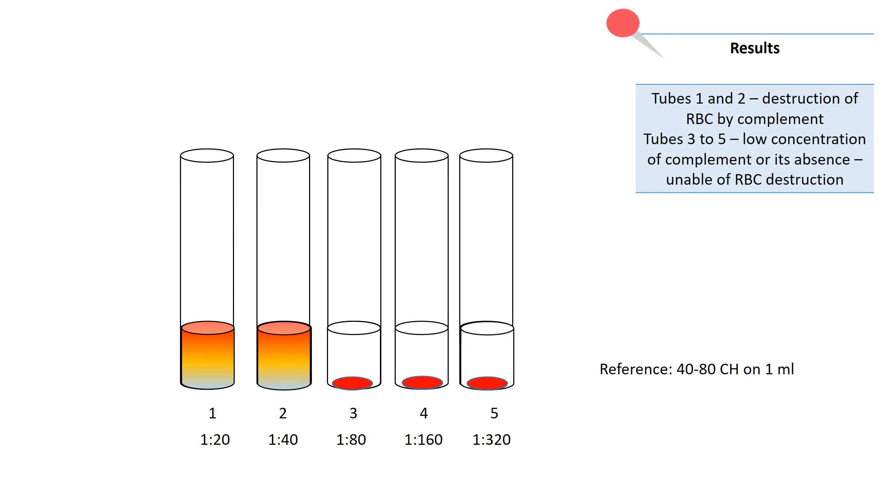We interpret the results. Tubes 1 and 2 have hemolysis because destruction of RBC by complement.